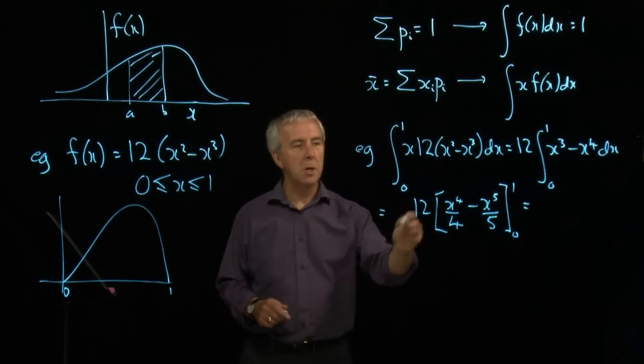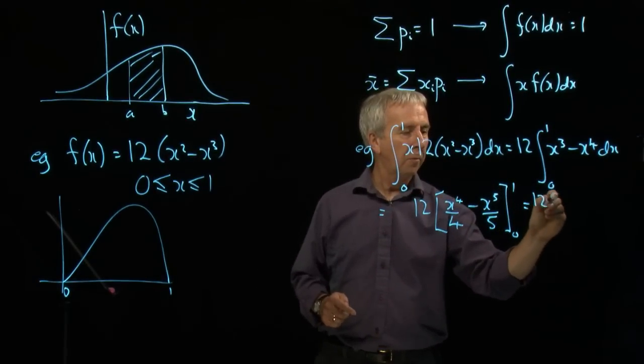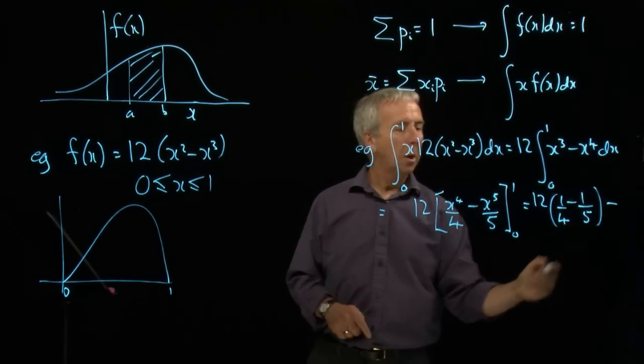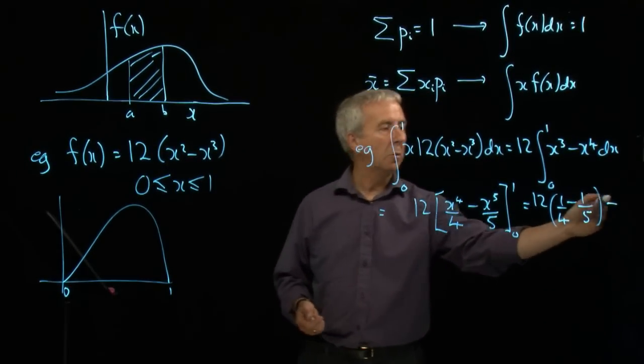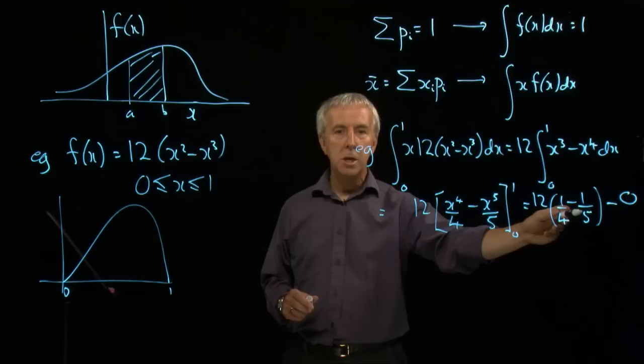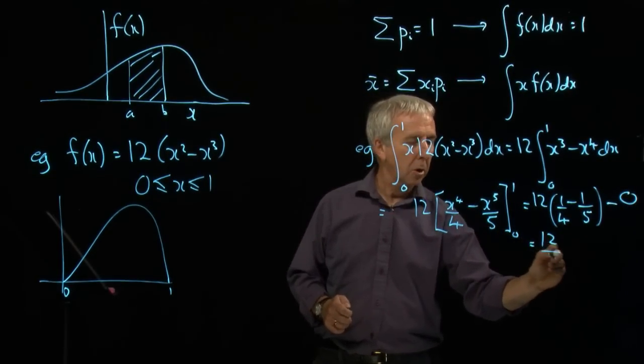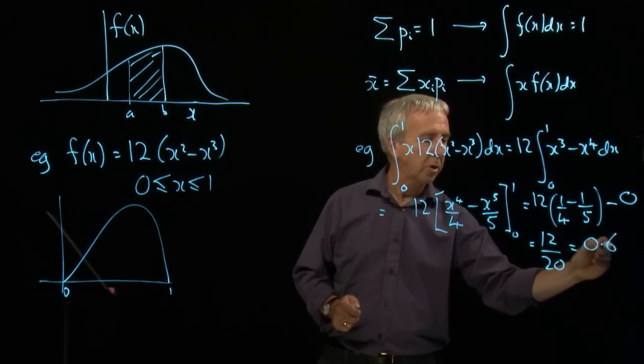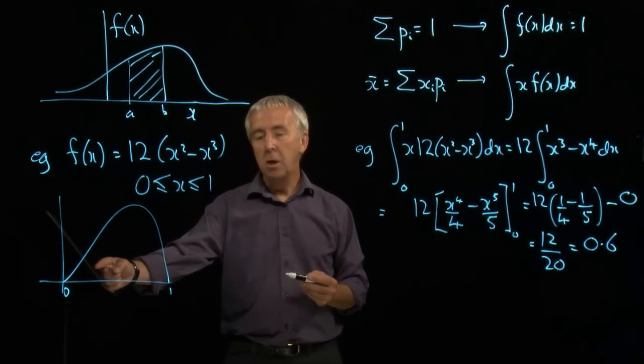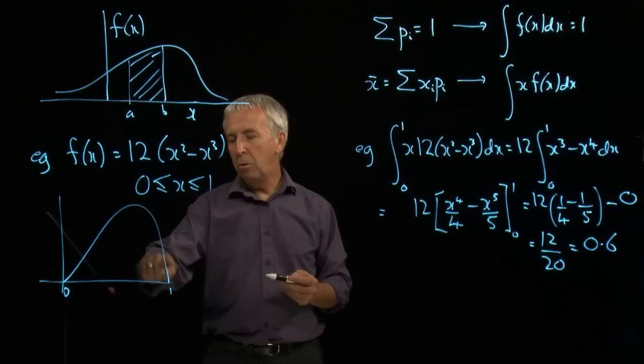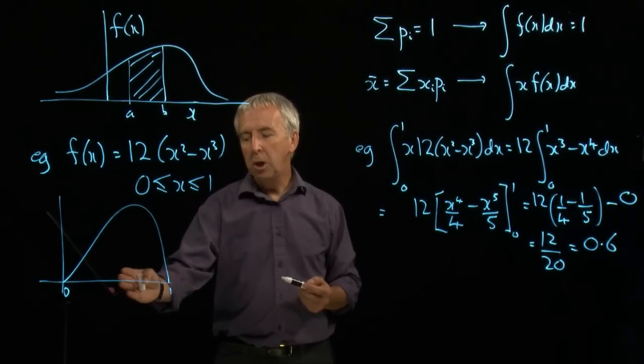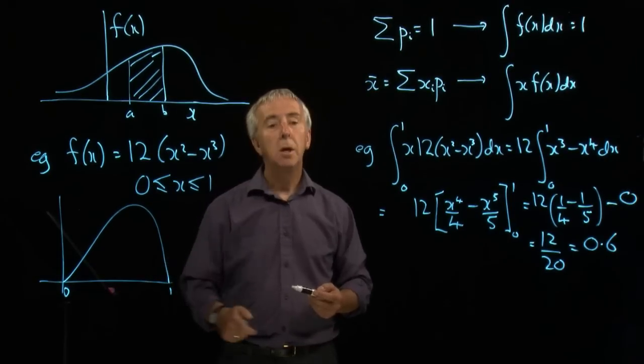From 0 to 1. So if we put the top limit in, 1, we get 12 times (1/4 - 1/5). And the bottom limit, 0, we get 0 minus 0. So that's not going to have any effect. A quarter minus a fifth is a twentieth. So we get 12/20, which is 0.6. So the average value of this distribution is actually 0.6. We saw it's not symmetrical. It's not a nice parabola for which the mean would be bang in the middle. This one is shifted a bit towards the top end, and so the mean is also shifted.